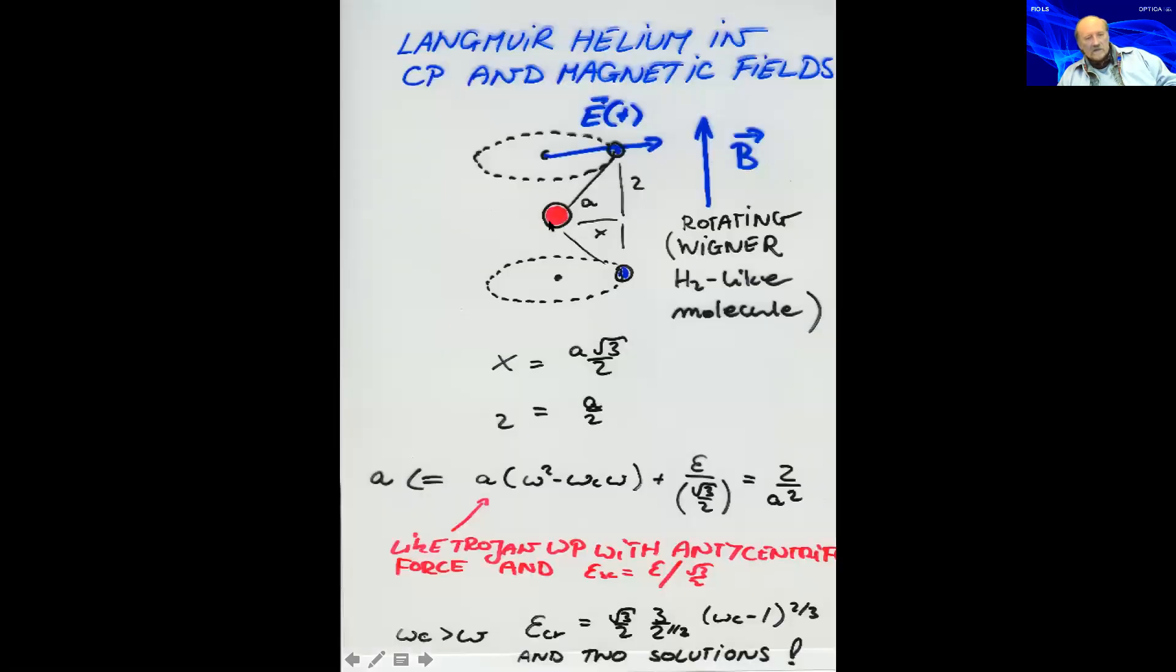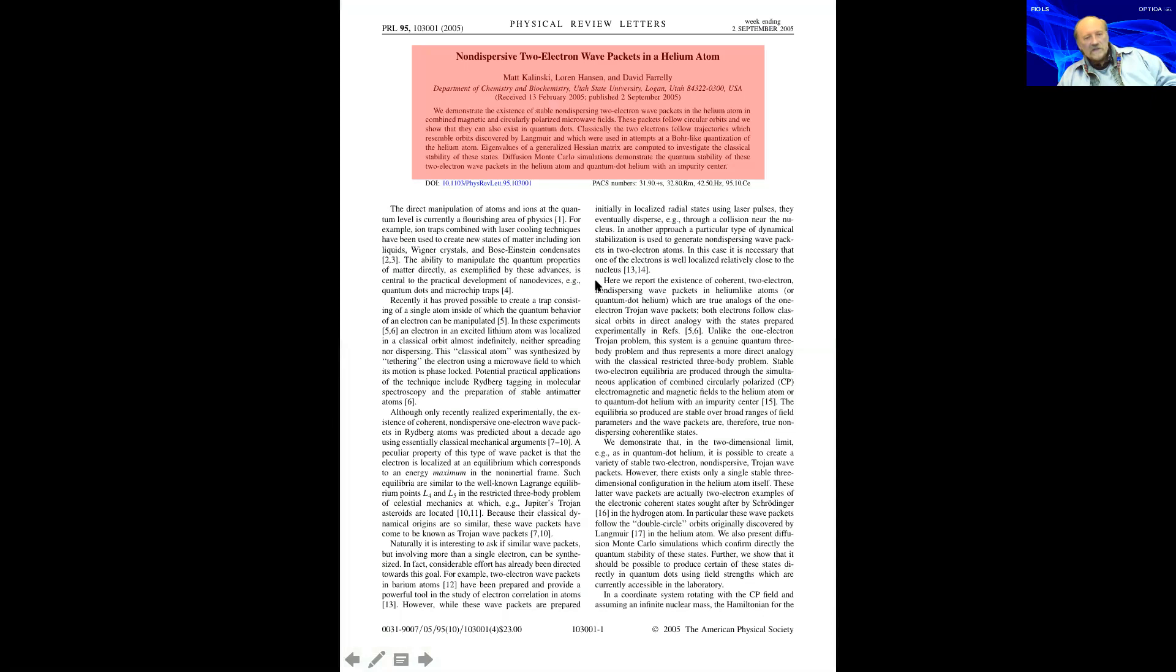The trajectories are classically unstable, and you can stabilize them with addition of the circularly polarized field and perpendicular magnetic field. The CP field is rotating around the vector of the B field, and you get the stability zones which correspond to non-dispersing probability density wave packets of two electrons now. So these are fully quantum solutions which correspond to classical solutions of two electrons on Langmuir trajectories.